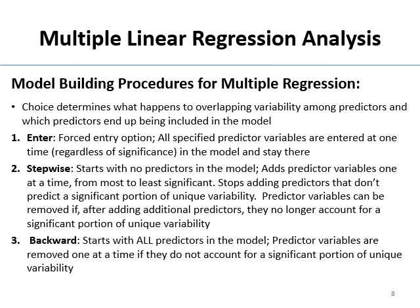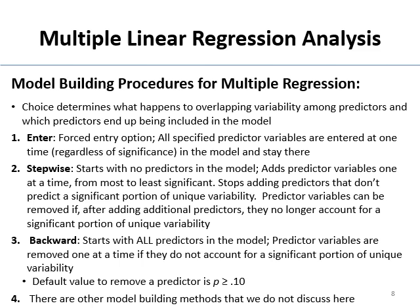Backwards starts opposite to stepwise and only moves in one direction. It starts with all the predictors in the model — it throws everything in and sees how well it can predict. Then it takes out the junk one variable at a time: removes the variable doing the worst job, re-crunches the numbers, takes out the next worst, and stops when everything remaining does a good job of predicting your DV. The alpha level used to remove predictors is 0.10. There are also other methods, like forward, but these three are enough for getting into this.